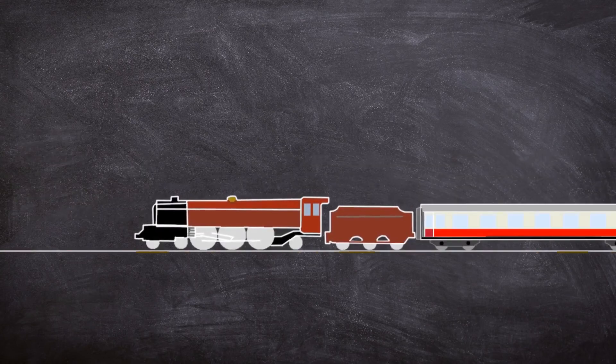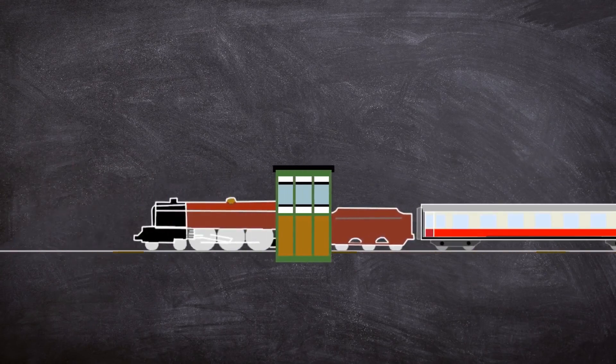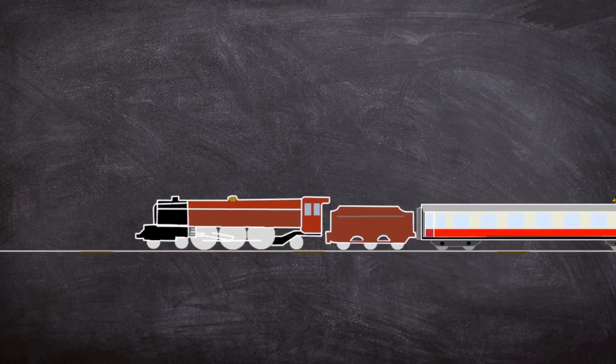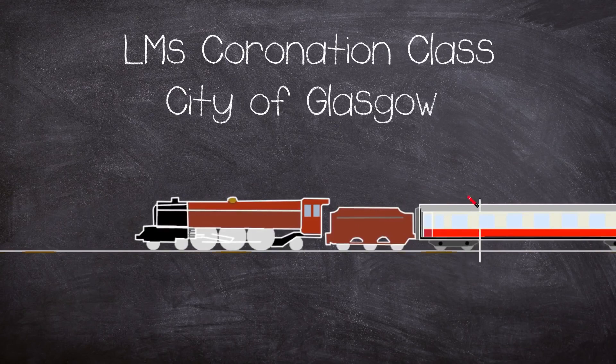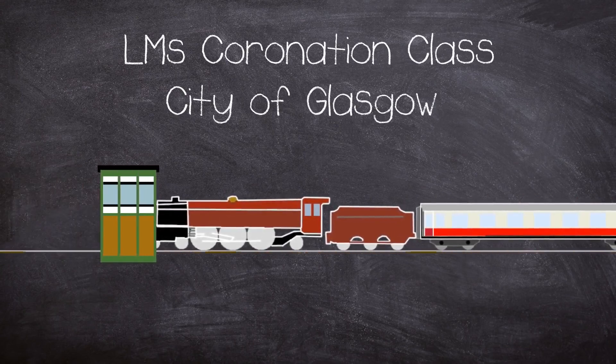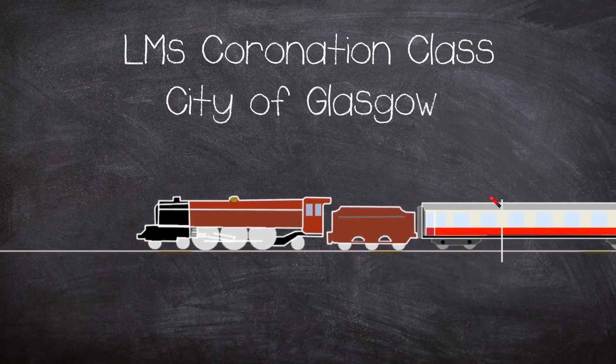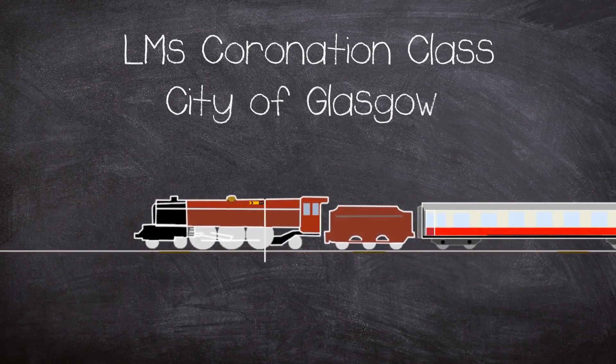The 8:15pm Perth to Euston night express was an 11 carriage sleeper train carrying approximately 85 passengers and was hauled by LMS Coronation class locomotive called the City of Glasgow. The locomotive was one of the most powerful at the time in the country and was making easy work of its mix of wooden and steel constructed coaches.